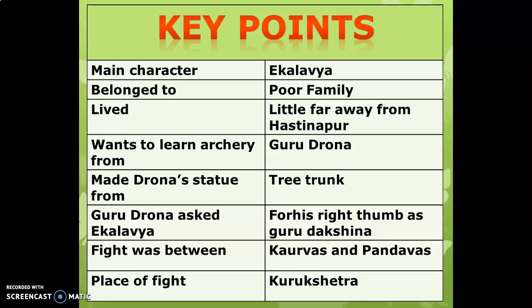The main character of this story is Eklavya. He belonged to a poor family and lived a little far away from Hastinapur. He wanted to learn archery from Guru Drona, so he made a statue of Drona from a tree trunk. Guru Drona asked Eklavya for his right thumb as Guru Dakshina. The fight was between the Kauravas and the Pandavas, and the place of the fight was Kurukshetra.